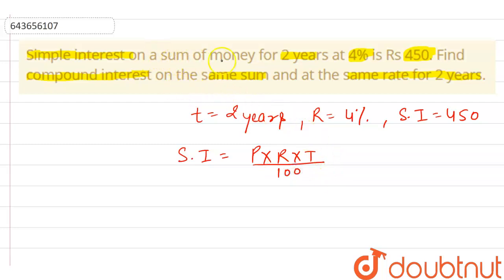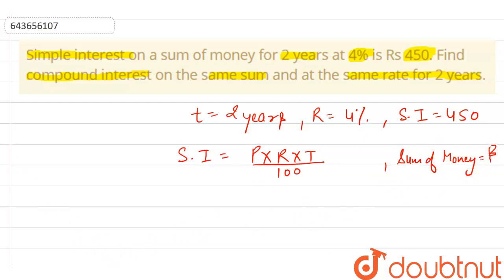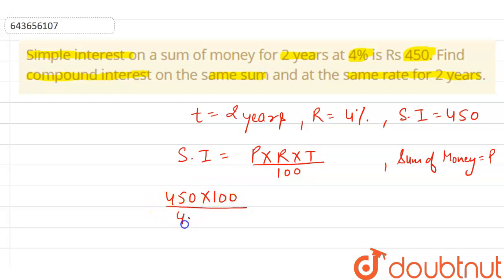Now let the sum of money be P — the question says on a sum of money, so the sum of money is P, also known as the principal amount. So we have: P equals SI into 100 divided by R into T, that is 450 into 100 divided by 4 into 2.